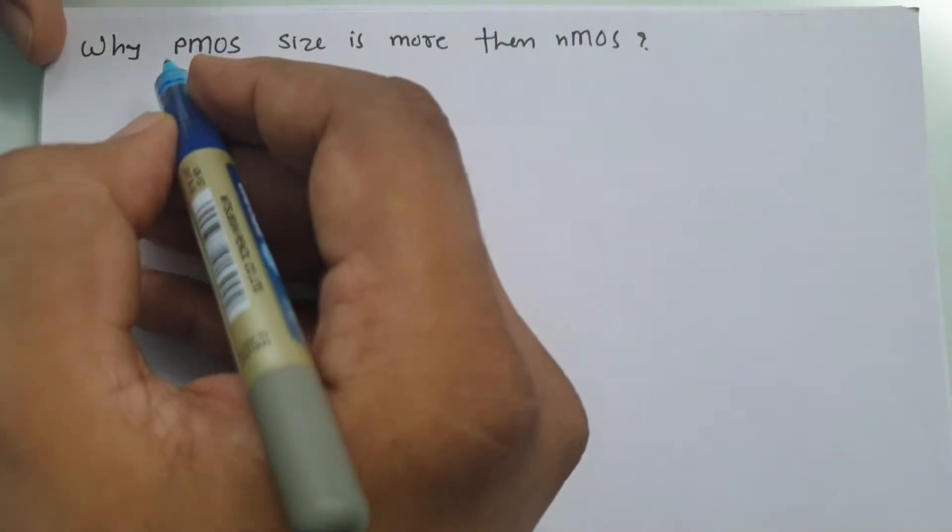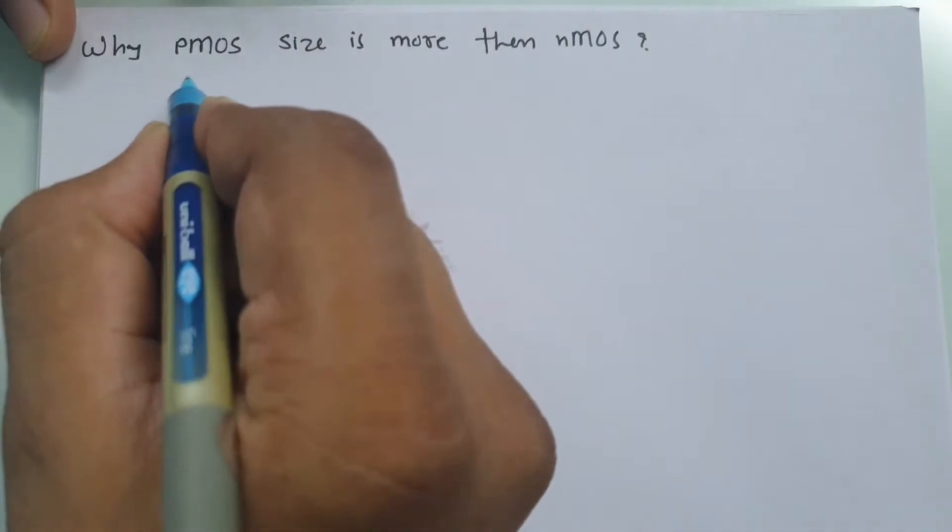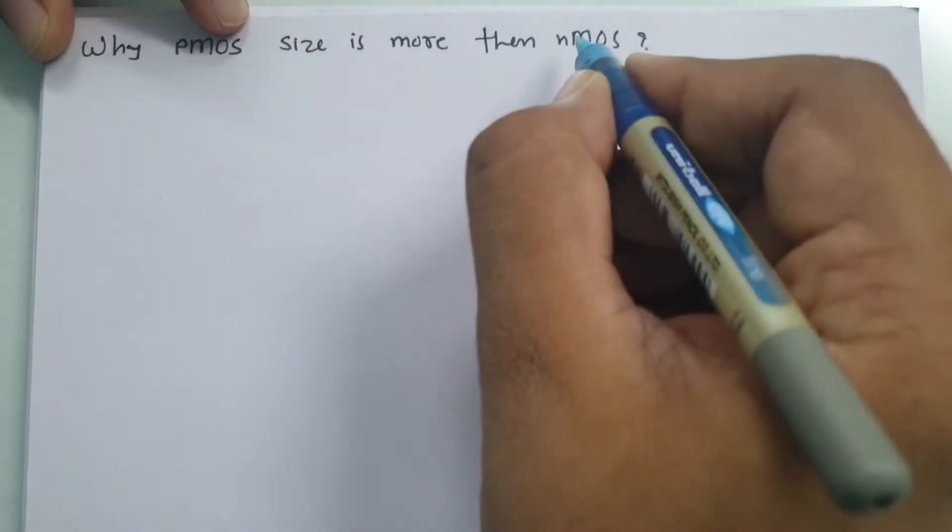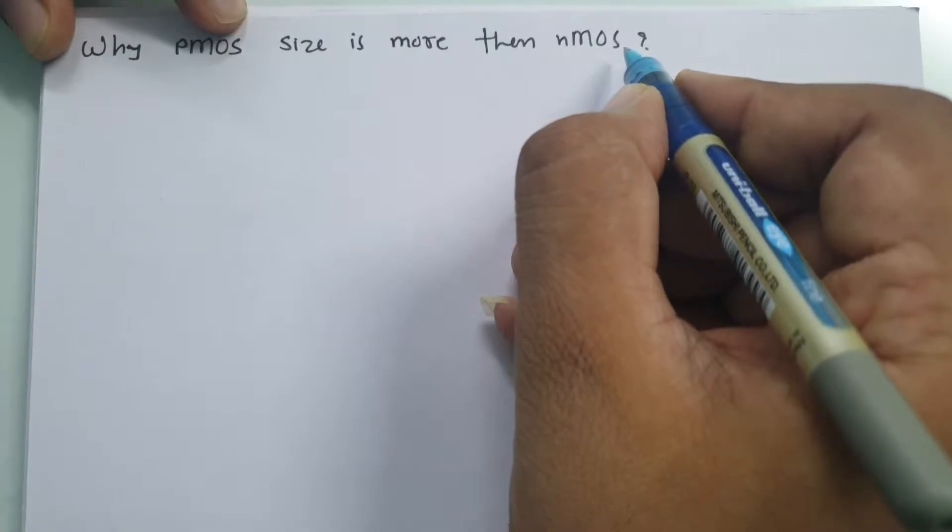First of all, we need to understand in PMOS, majority carriers are holes and in NMOS, majority carriers are electrons.